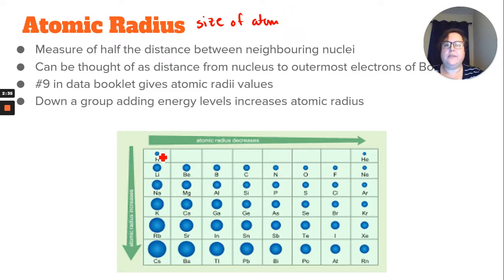As you're going down a group, the reason why the atoms are getting larger is because you're adding energy levels. You are increasing the shielding, which decreases that attraction to the nucleus, so the atom's getting larger.